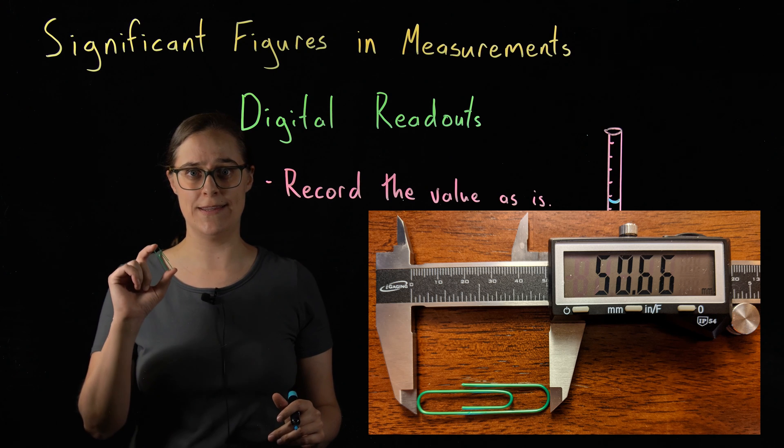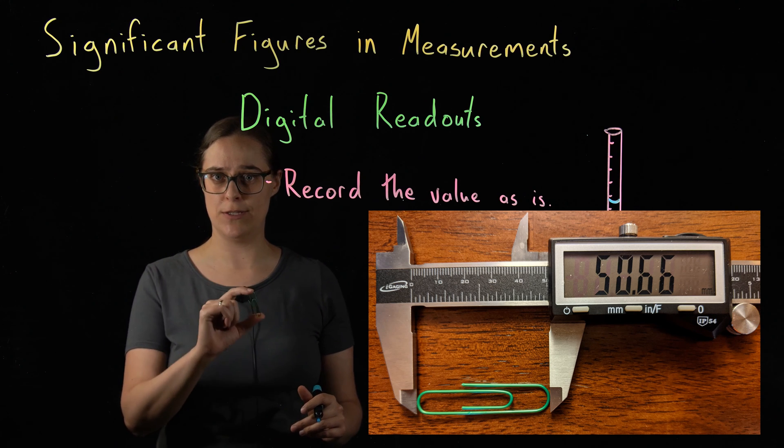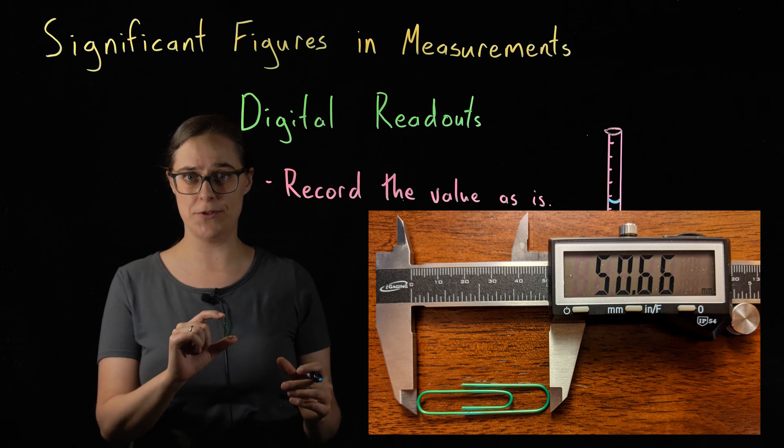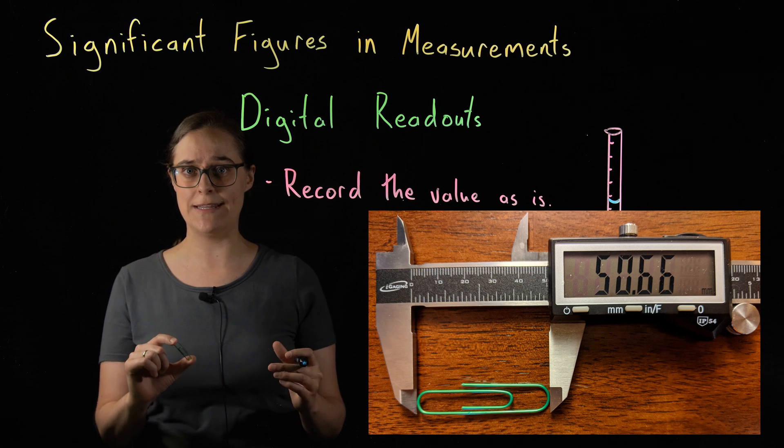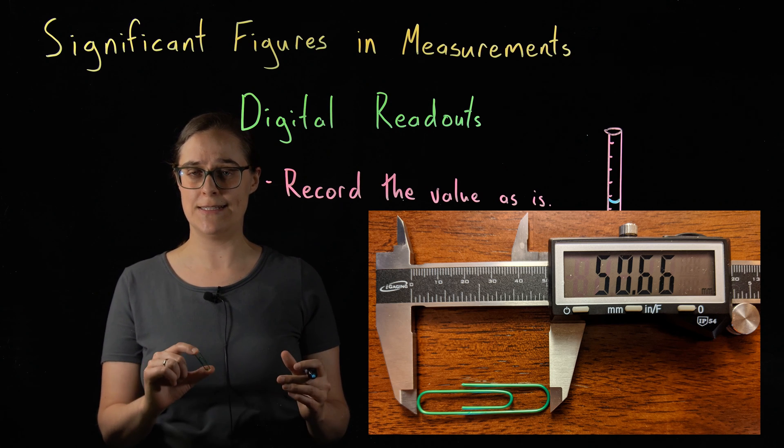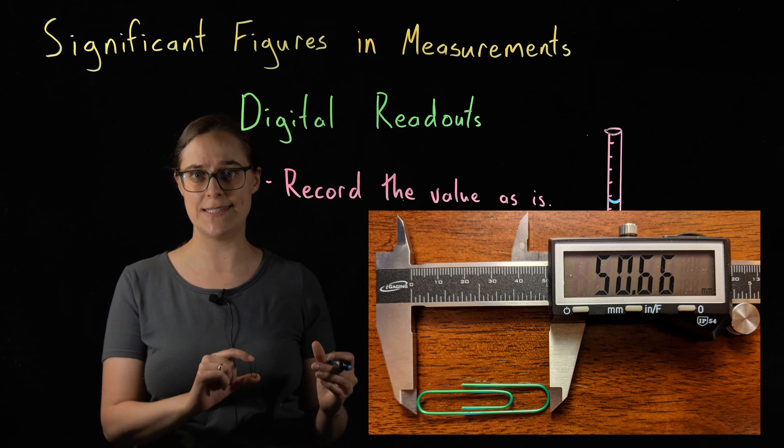So if I'm recording the length of this paperclip using these calipers with a digital readout, I am just writing that number down that I see. In this case, 50.66 millimeters.